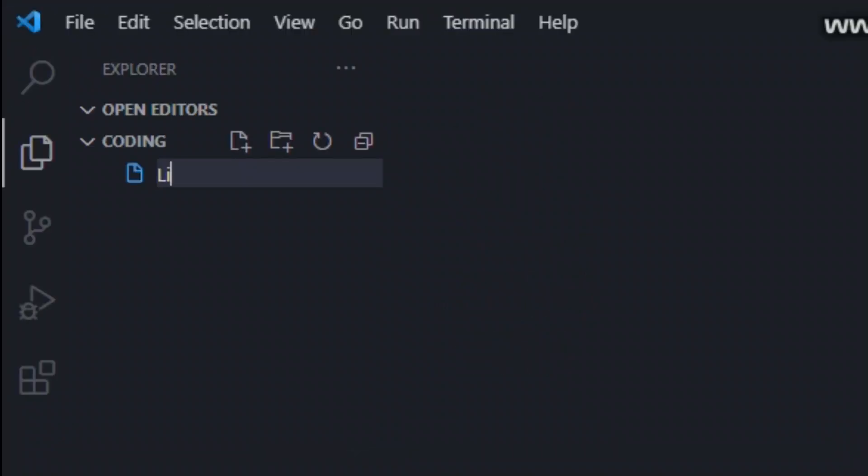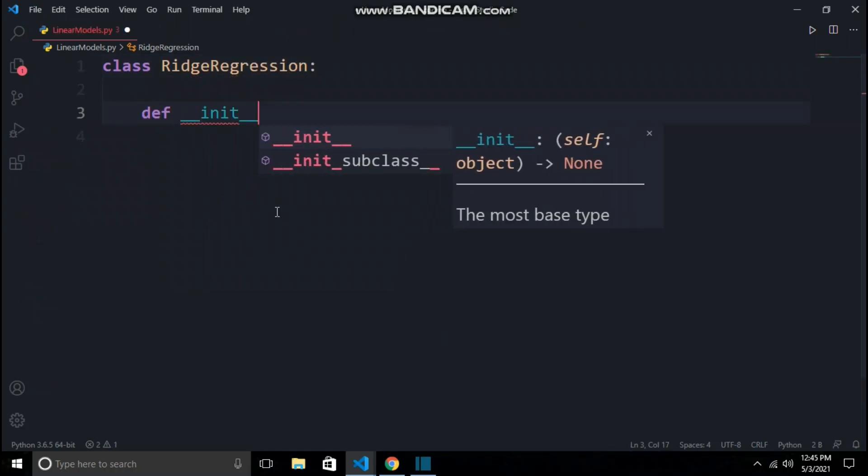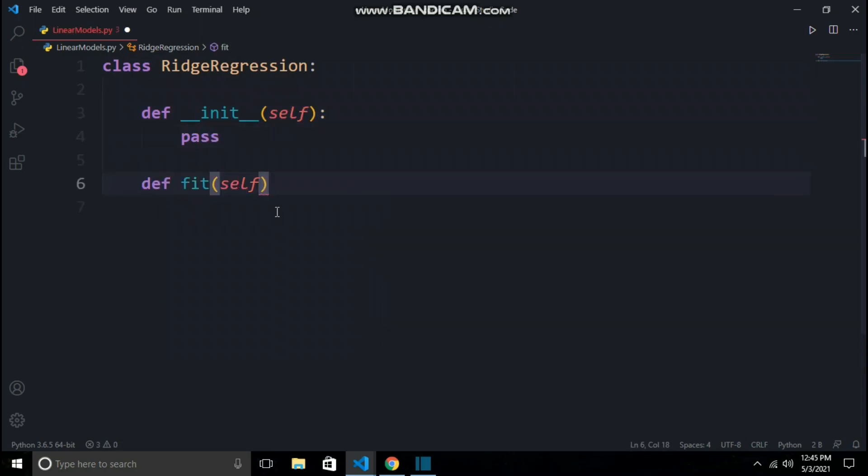First I will make a new Python file named linear_model.py. Then I will make the class named ridge regression. In it I will make three functions namely init, fit, and predict.